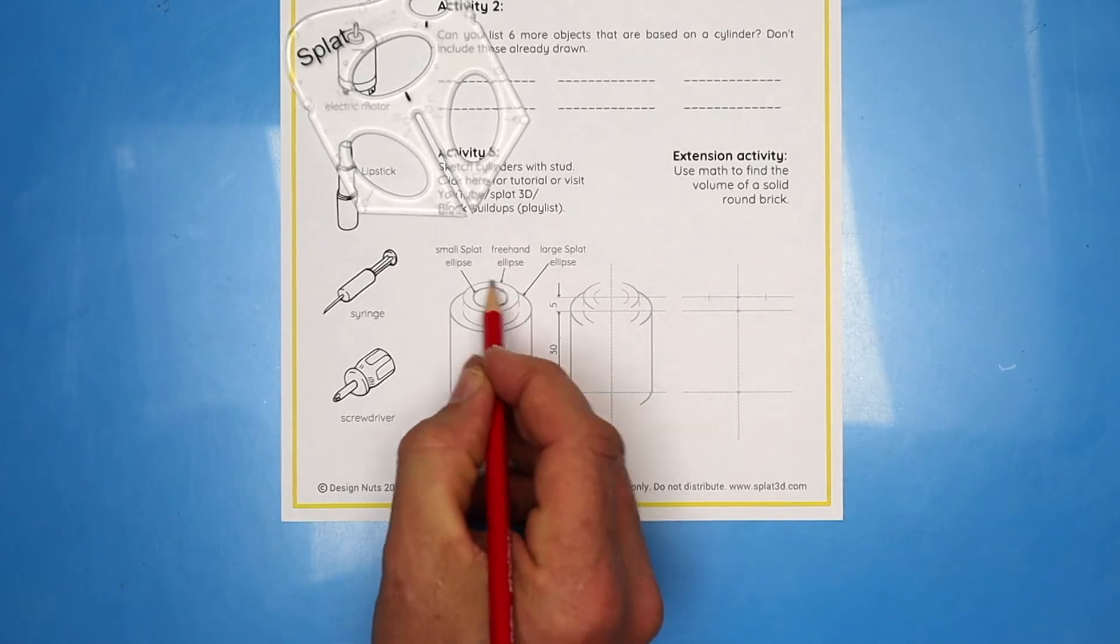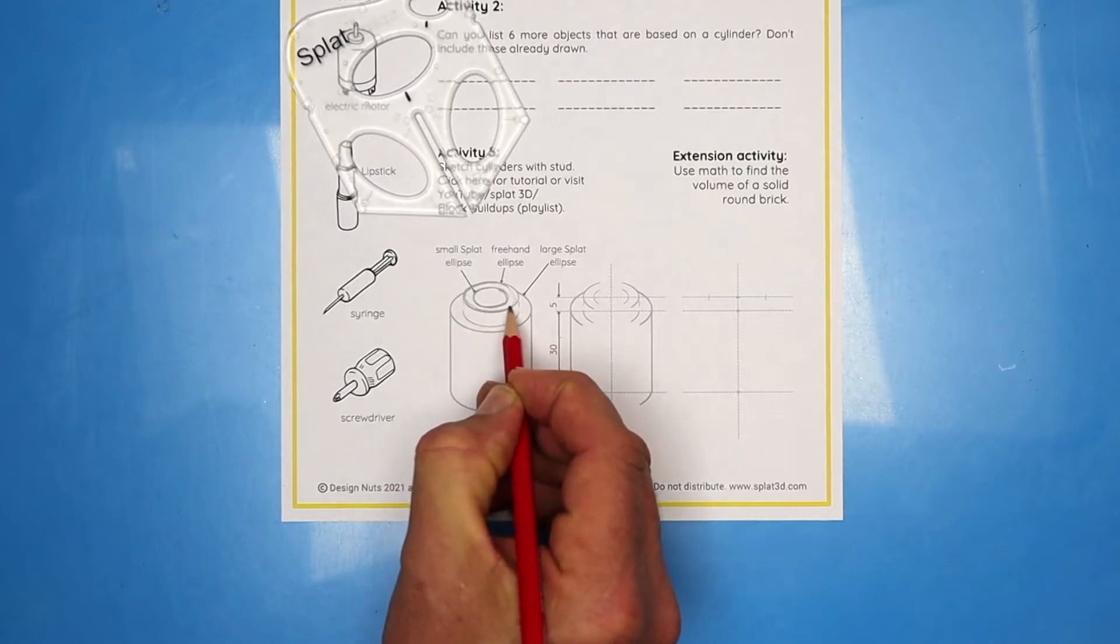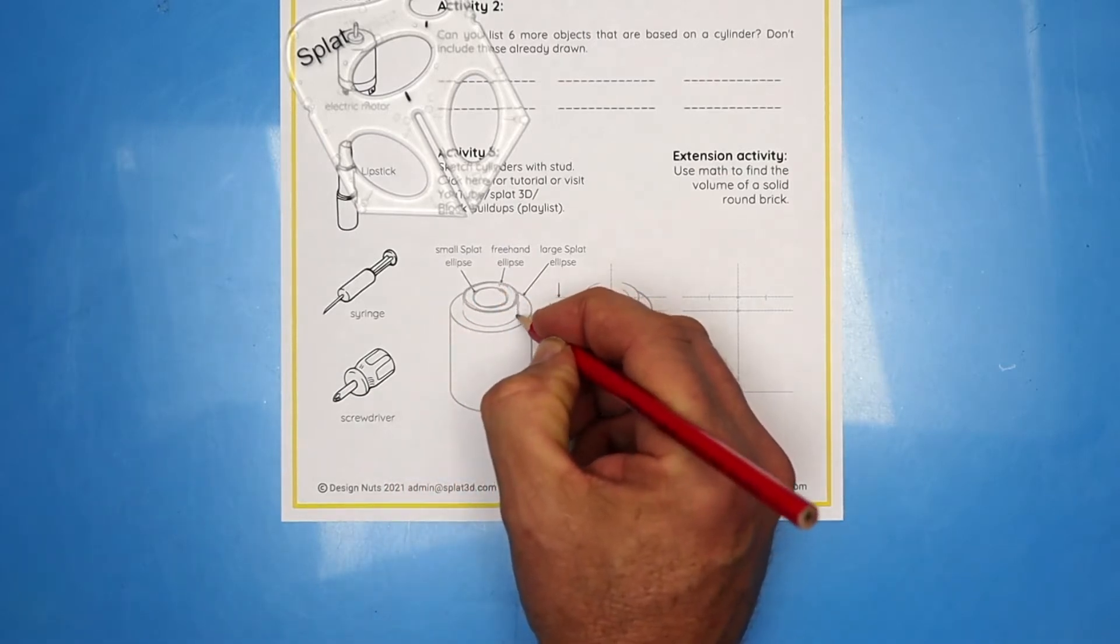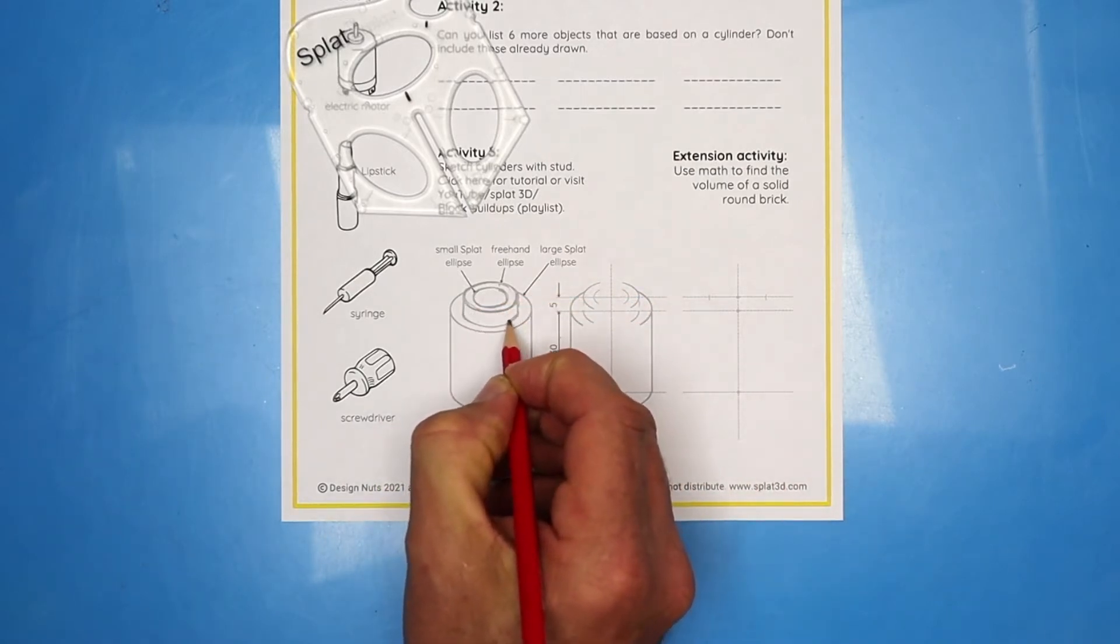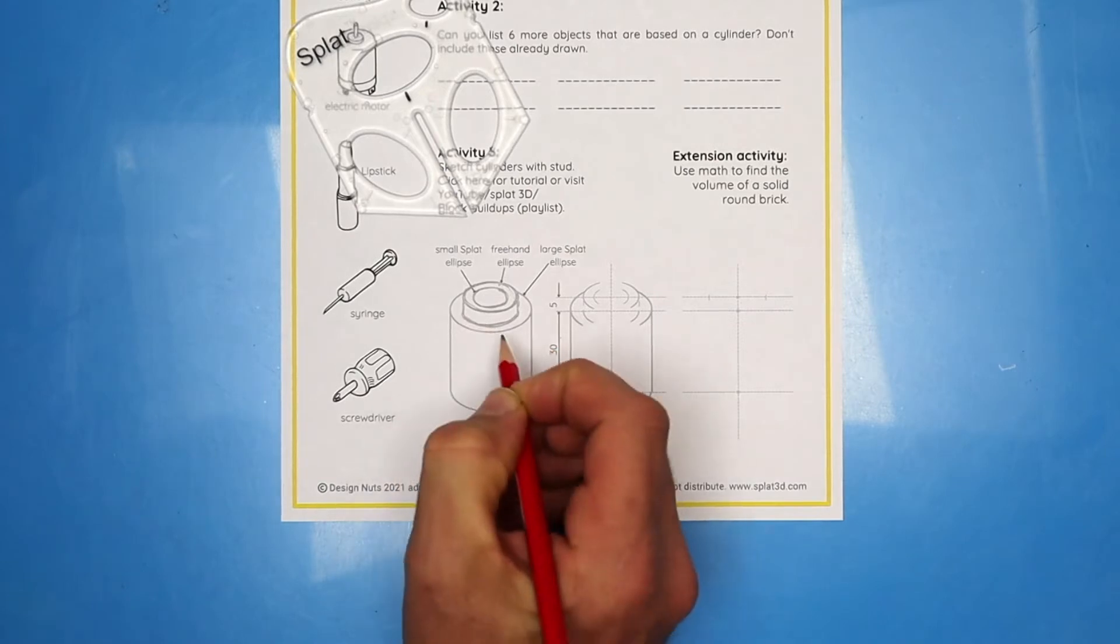The next one out is slightly bigger. So again, practice drawing the shape and when you're confident, bring your pencil down and draw one ellipse. Then drop some lines down 5mm and half an ellipse to finish off the stud.